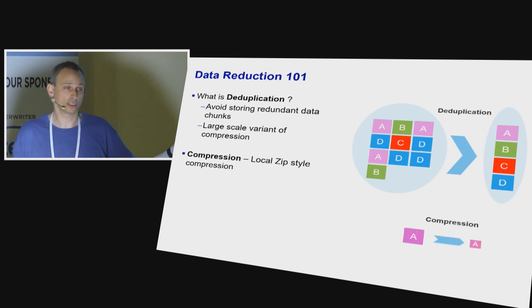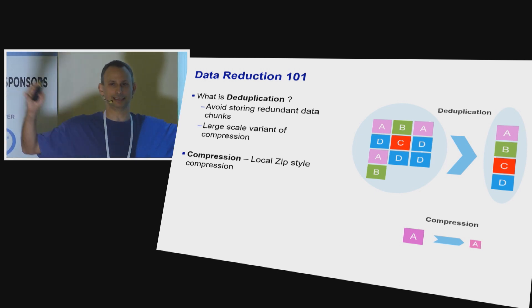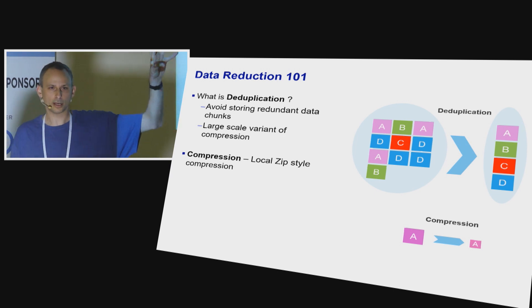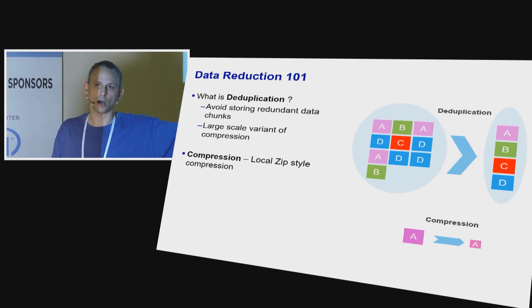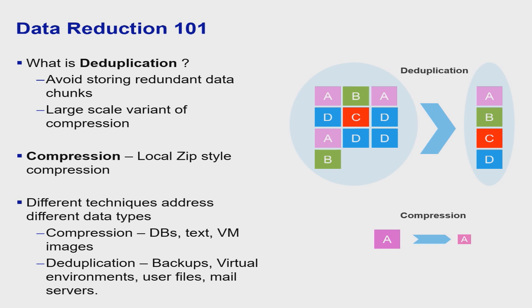Compression, what we say, so deduplication is compression, but when we say compression, what we mean is local zip style compression. Let's not look at very large scales. Let's take one chunk and say, how can you compress this single chunk on its own? Why two techniques? The two techniques affect different workloads, different data types. Databases, compression is very good with text. And then deduplication really performs well with backups and virtual images.